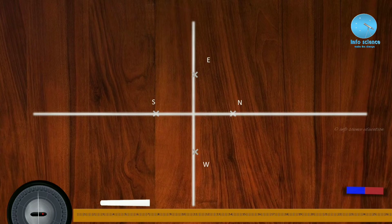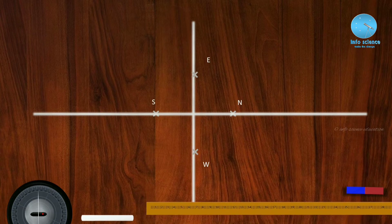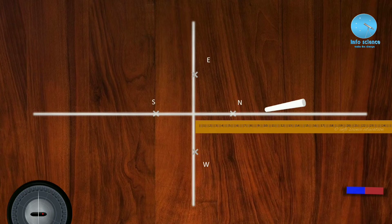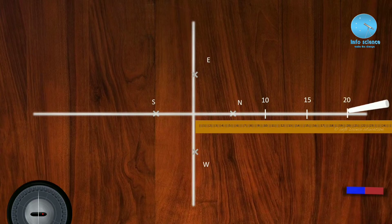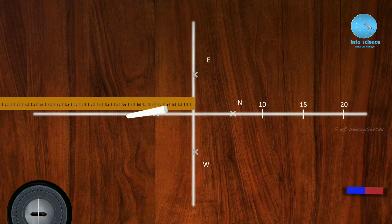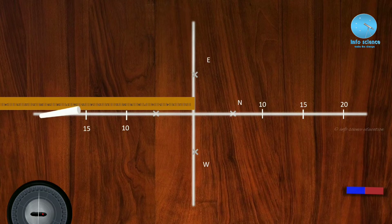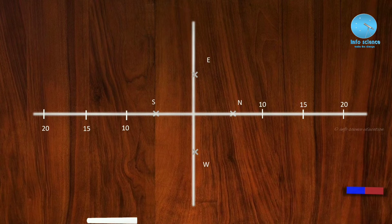Along the north-south line, we mark distances of 10 cm, 15 cm, and 20 cm on the north side, and similarly 10 cm, 15 cm, and 20 cm on the south side. The center is marked as 0, with north-south and east-west reference lines.